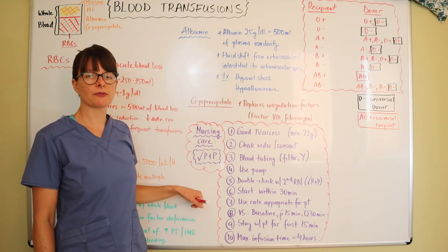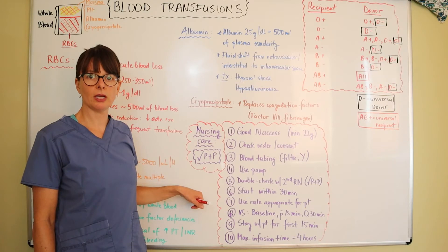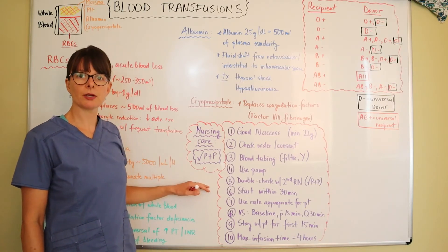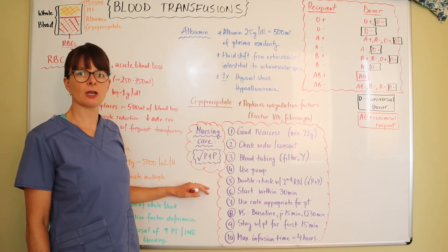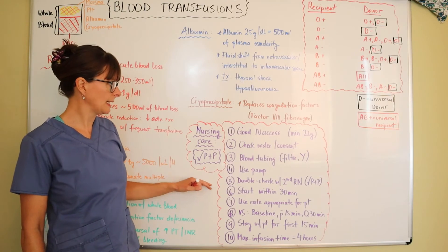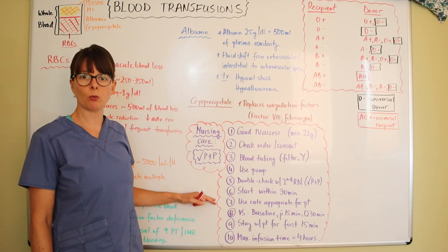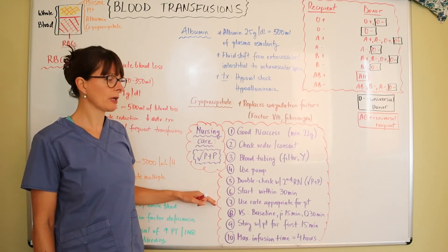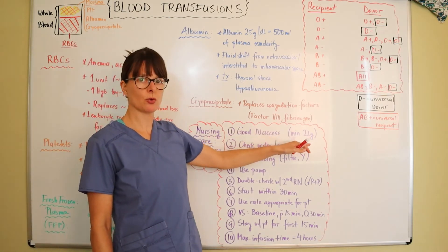Very important with blood transfusions is the nursing care and precautions. Policies and procedures may vary depending on what hospital you work at. Always be familiar with the policies and procedures of your specific hospital. Some are universal but some will depend on where you work. First, when we give a blood transfusion, we want to make sure that we have good IV access. We want to have a minimum of a 22 gauge IV.